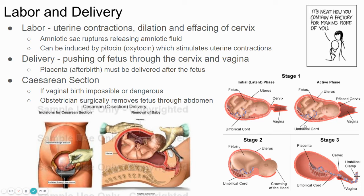A C-section is basically where they make an incision in the woman's abdomen, cut through the abdominal muscles, through the uterus, and through the amniotic sac, and they take the fetus out through the abdomen rather than a normal vaginal birth. Usually they wouldn't prefer to do a C-section — usually they would want the woman to have the child vaginally. But if there's some complication, some problem with the health of the mother or the fetus, or they need to get it out quickly, then they can do a C-section as an alternative.